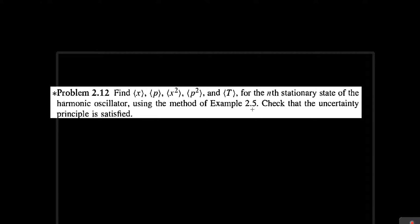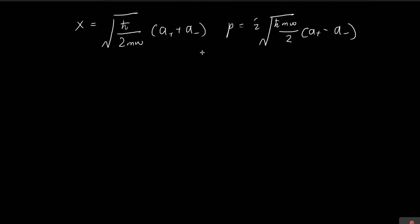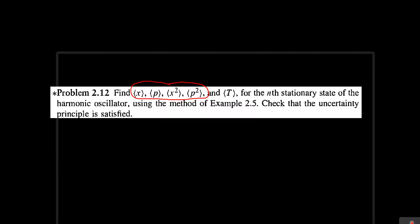In this problem, we are going to use the method of example 2.5 to find these expressions. In this video, we'll focus on finding these four terms. By following the method of example 2.5, we will be using two results so we can express x and p in terms of a-plus and a-minus. We're going to use this to find these expected values.